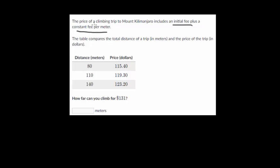We have a constant slope, and that's dollars per meter. And the table compares the total distance of a trip in meters and the price of the trip in dollars. And we're given our table here and then asked, how far can you climb for $131?